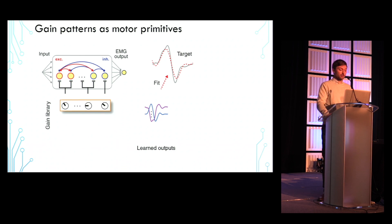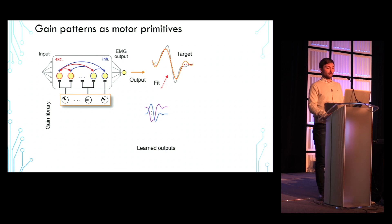And interestingly, when we apply this gain pattern to the network, the resulting network output also closely resembles the target movement. Now, this means that gain patterns can be combined to generate new movements in a predictable manner.